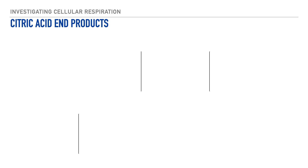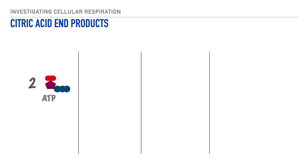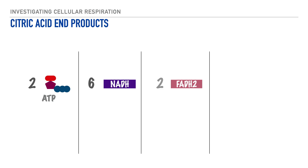Just as a quick review from our previous process, which was the citric acid cycle, here are our end products. We end up with 2 ATP, 6 NADH, 2 FADH2, and 4 molecules of carbon dioxide.